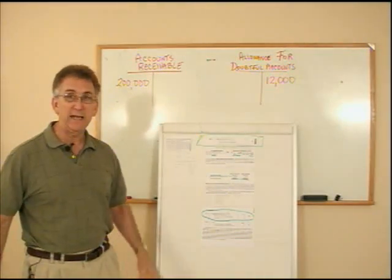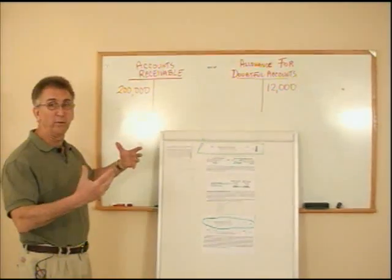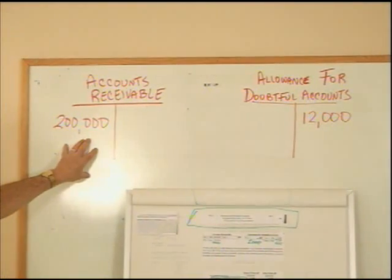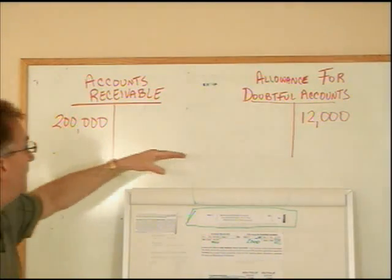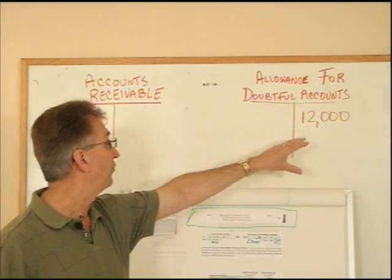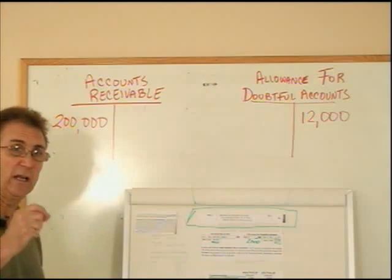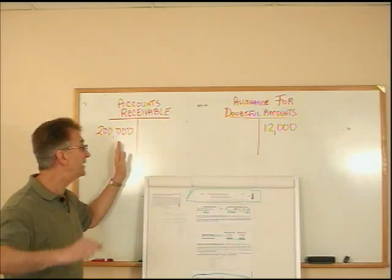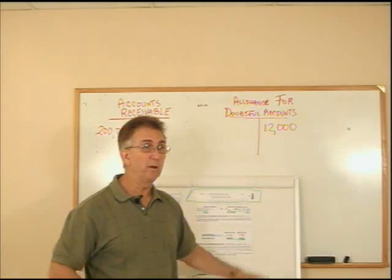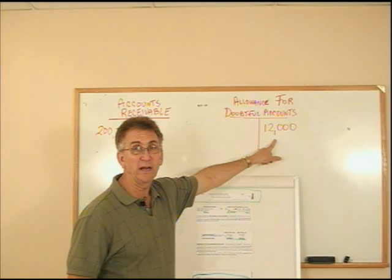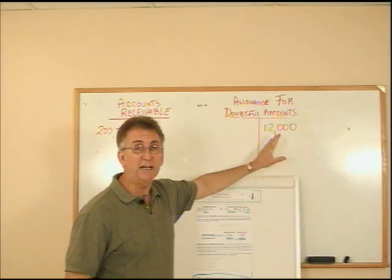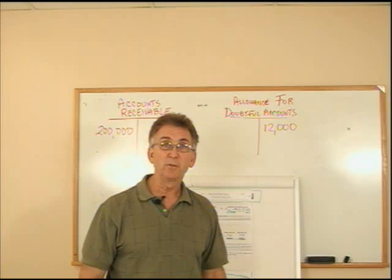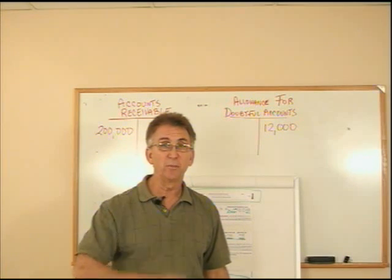We're talking about Bad Debt again. I want you to look up here and remember what the numbers are. Let's say at this point I have receivables of $200,000 in my accounts receivable and over here in my allowance account I have $12,000. That $12,000 is an estimate — an accounting guesstimate — based on either the percentage of sales or percentage of receivables method.